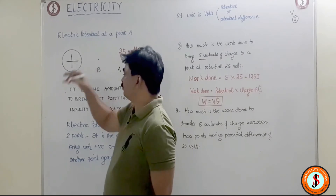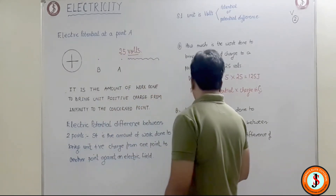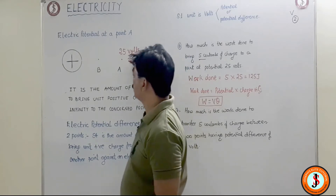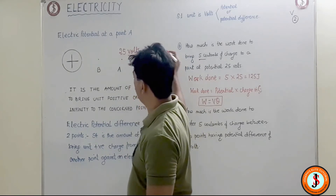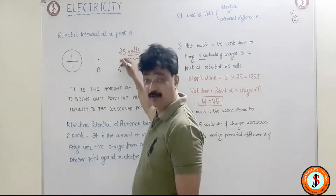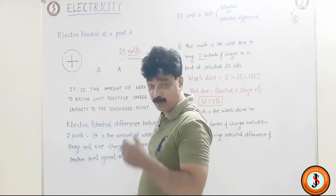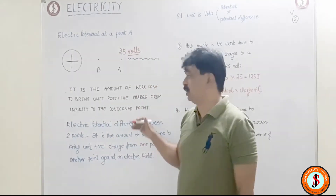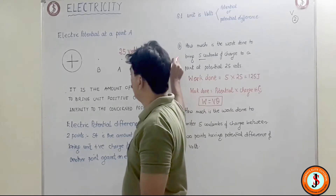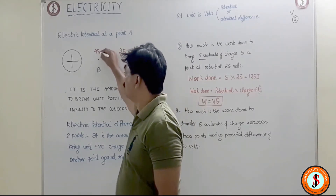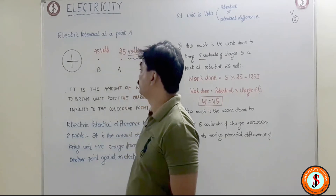Now suppose I am bringing this charge over here. From infinity I bring one Coulomb of charge till point A — we do 25 joules of work, so potential here is 25 volts. If I take it from infinity to point B, which is further closer, I will have to do extra work, so it is 45 volts.